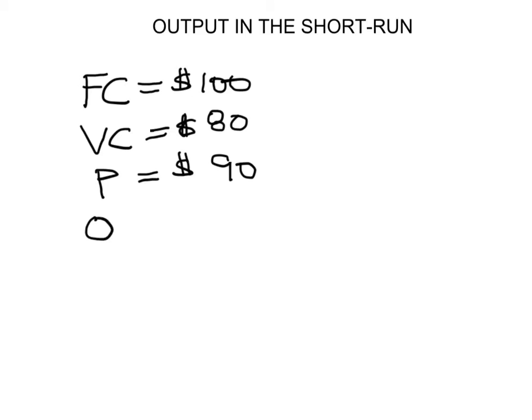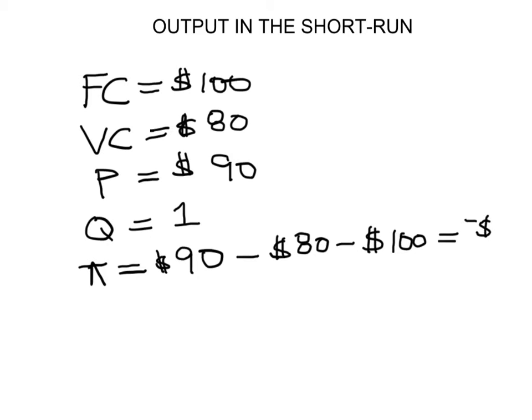So when you produce one unit of output, how much revenue, how much profits do you have? Well, your actual economic profits at this point are going to be the revenue you make, which is $90, minus the variable costs, which are the $80, minus the $100, which are your fixed costs. So clearly after this, you're going to be in the hole for $90.